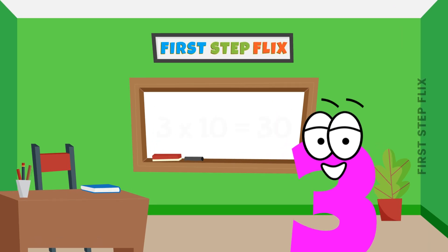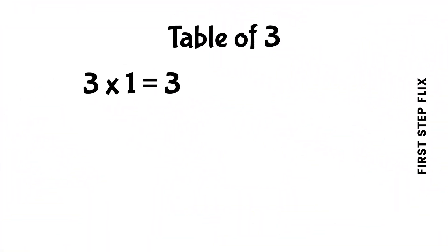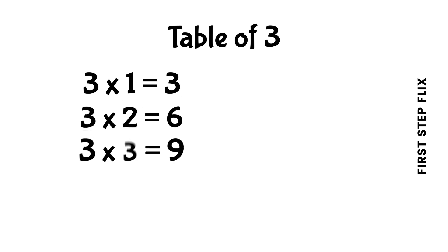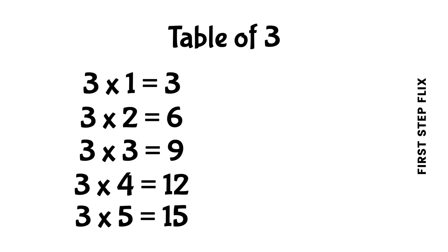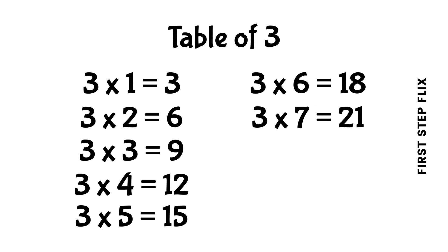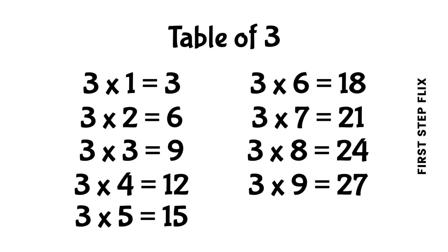Three tens are thirty. Let's repeat: three ones are three, three twos are six, three threes are nine, three fours are twelve, three fives are fifteen, three sixes are eighteen, three sevens are twenty-one, three eights are twenty-four, three nines are twenty-seven, three tens are thirty.